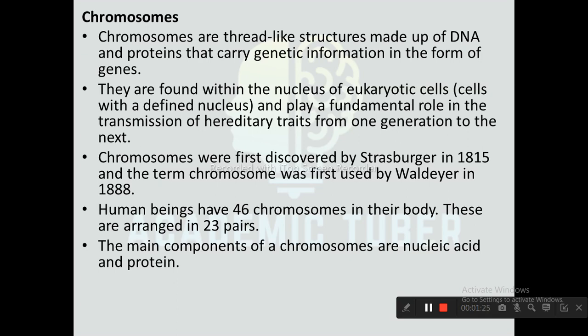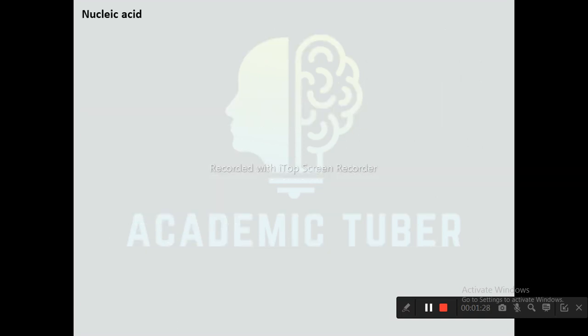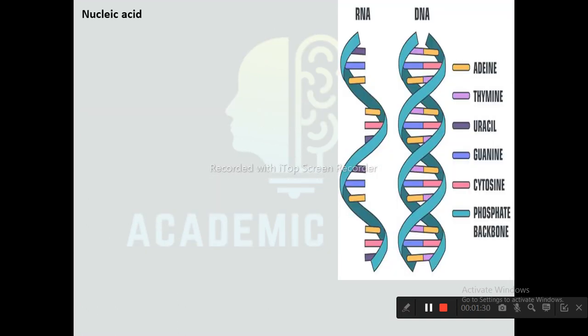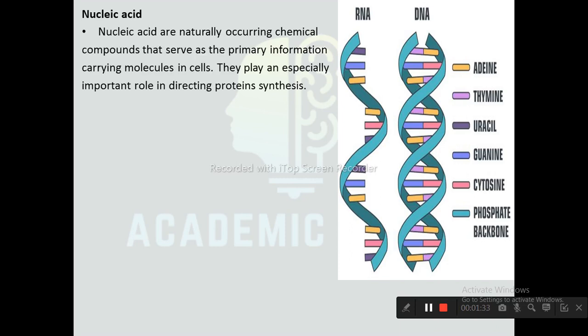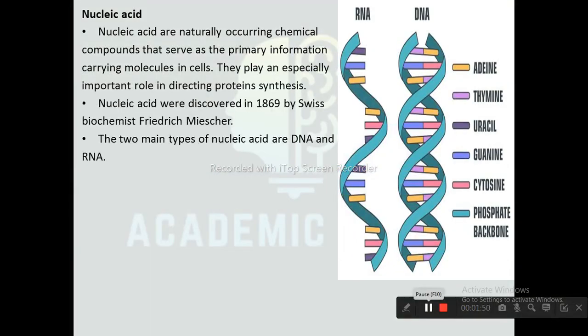The main components of a chromosome are nucleic acid and protein. Nucleic acids are naturally occurring chemical compounds that serve as the primary information-carrying molecules in cells. They play an especially important role in directing protein synthesis. Nucleic acids were discovered in 1869 by Swiss biochemist Friedrich Miescher.